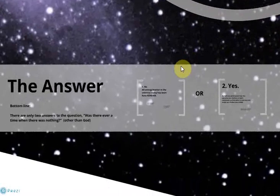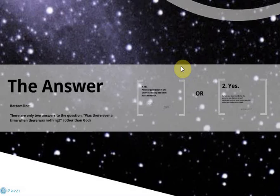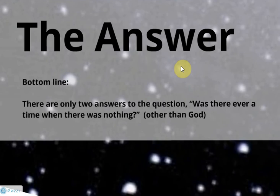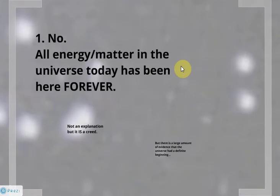And so that brings us back to the question. The bottom line is that there are only two answers to the question. Was there ever a time when there was nothing? And let's assume that God is outside of the universe. If God created it, he was outside of it. So was there ever a time in our universe where there was nothing? There's only two answers to that question. It is a yes or no question. The first one is no, there never was a time when there was nothing. All the energy and matter in the universe today has been here forever.